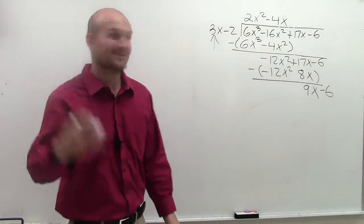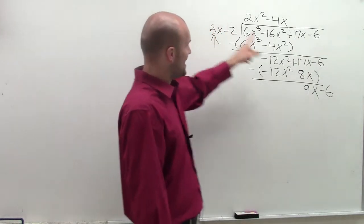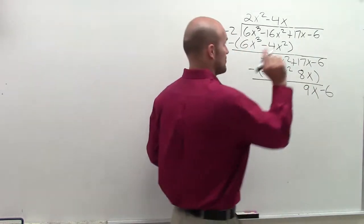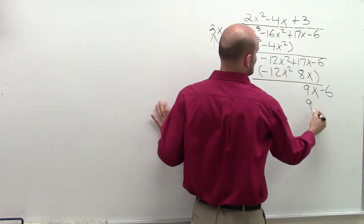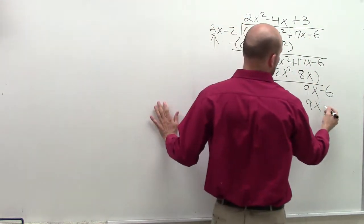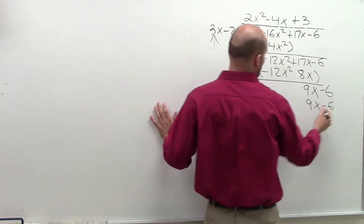All right, we're at the final stretch. 3x divides into 9x three times. 3 times 3x is 9x. 3 times negative 2 is going to be negative 6.